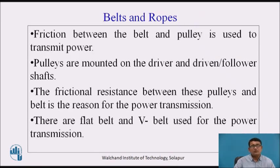For belts and ropes, motion is transmitted between the input shaft and the output shaft — the driver and the follower — due to the friction between the belt and the pulley surfaces. The pulleys are mounted on the driver and driven shafts, and the frictional resistance between the pulleys and the belts is the reason for power transmission.